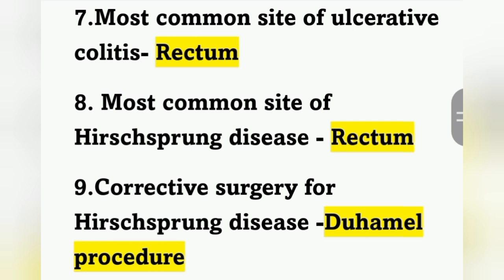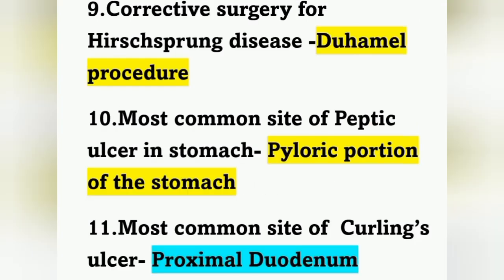The next question: corrective surgery for Hirschsprung's disease is the Duhamel procedure. The Duhamel procedure is the corrective surgery for Hirschsprung's disease. Next question: most common site of peptic ulcer in the stomach is the pyloric portion.